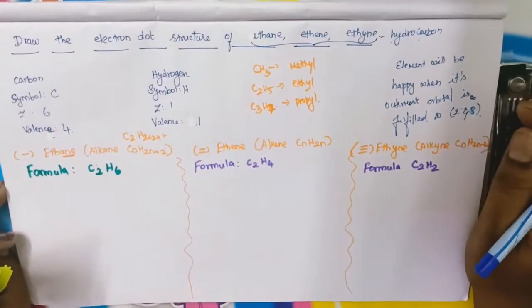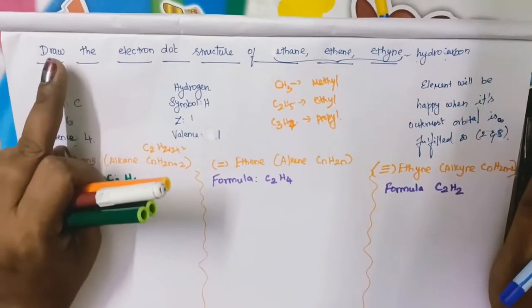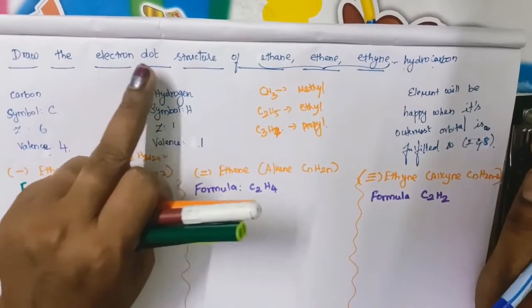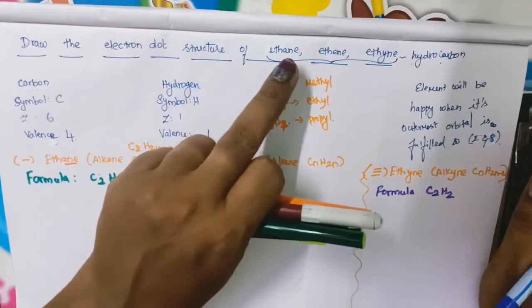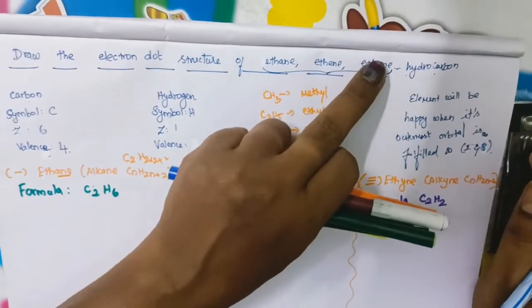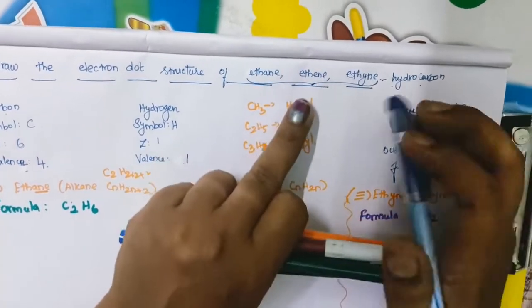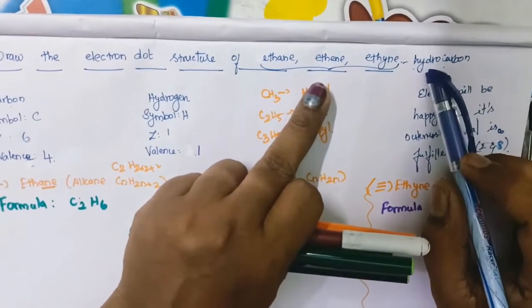Happy morning, my dear students. Today we are going to see about how to draw the electron dot structure of ethane, ethene, and ethyne. These three things are the hydrocarbons.